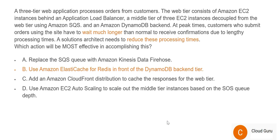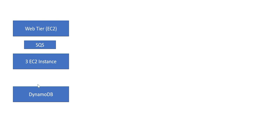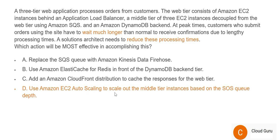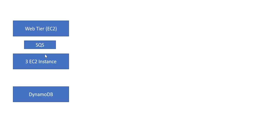Option B says to use ElastiCache on top of DynamoDB for caching, but this problem is not because of caching — the problem is that the queue is accumulating and the middle tier is not processing all requests in time. Option B will not work. Option C says to add CloudFront at the web tier for caching, but the problem is not in the web tier, it's in the middle tier — so C is wrong. Option D is the correct answer: put EC2 auto-scaling on the middle tier instances, scaled based on SQS queue depth. Queue depth means the number of requests sitting in the SQS queue — if there are 2,000 requests, the auto-scaling group can spawn more EC2 instances to process them. This is the right option.